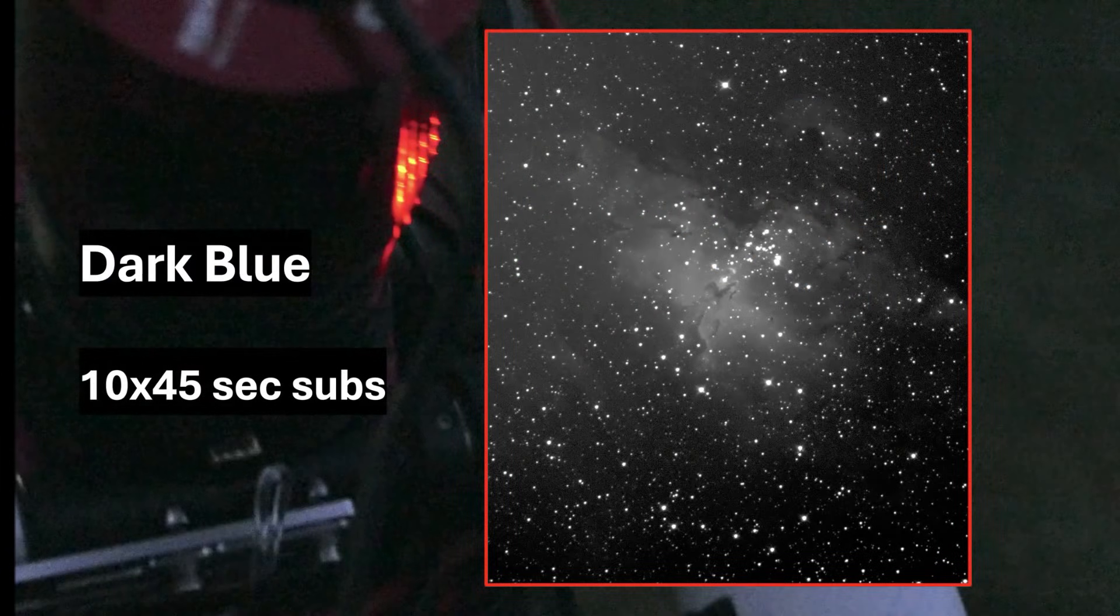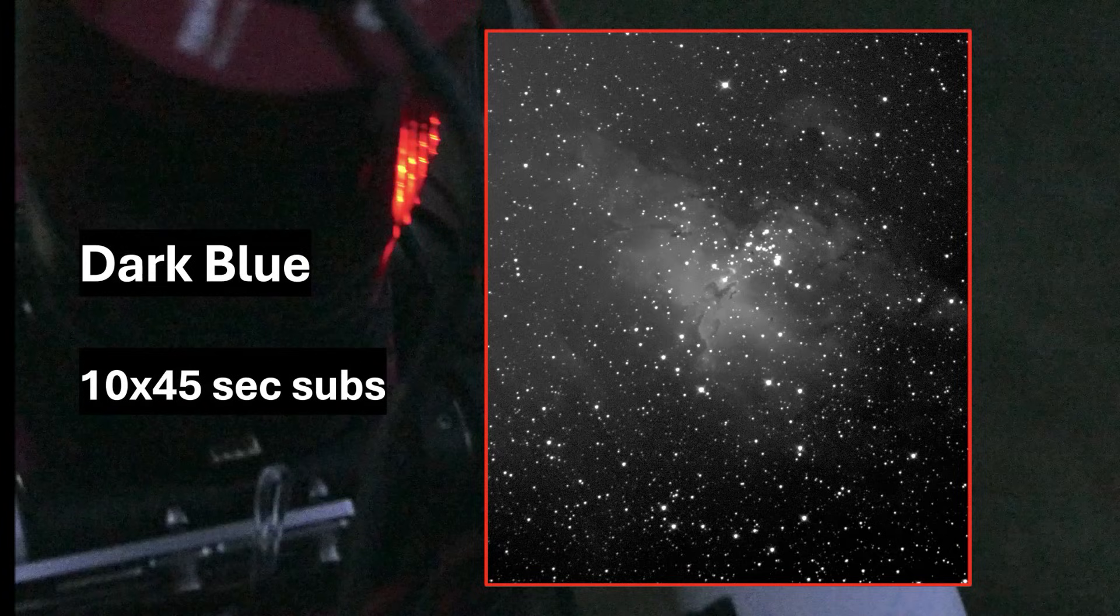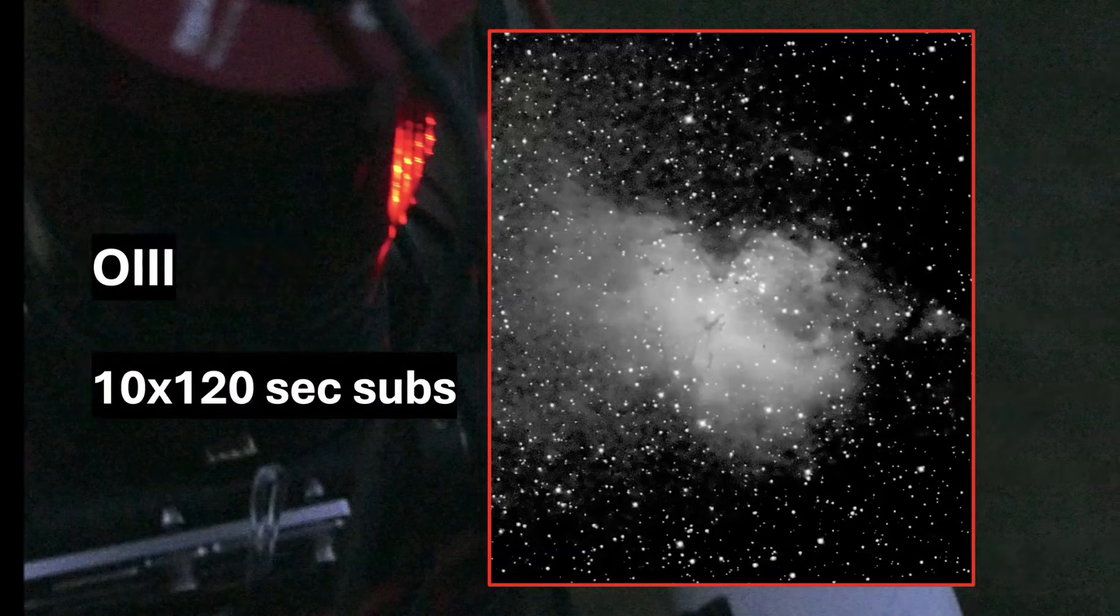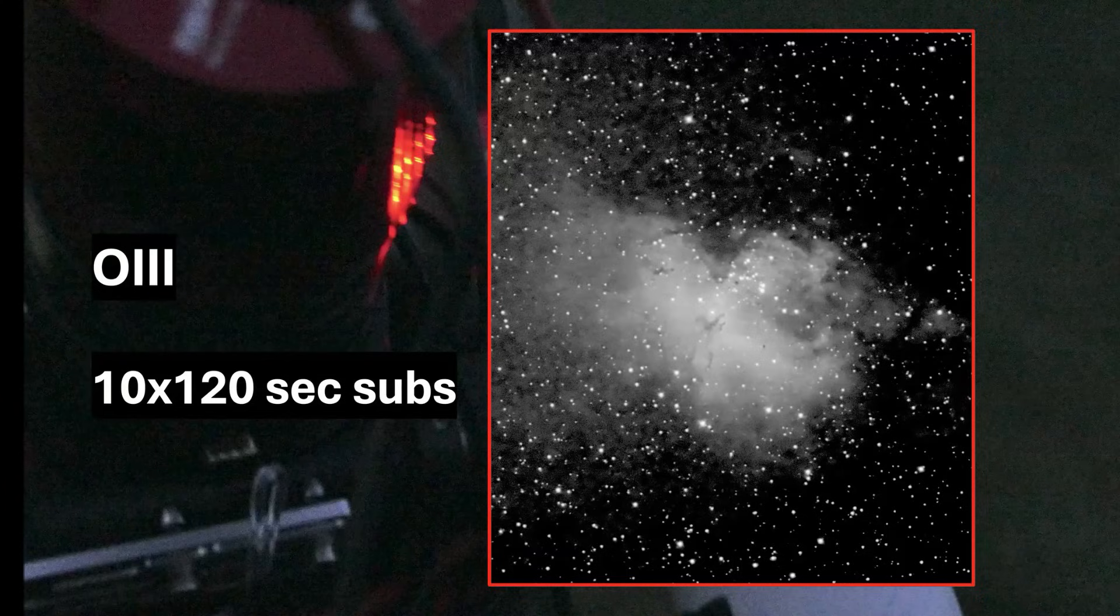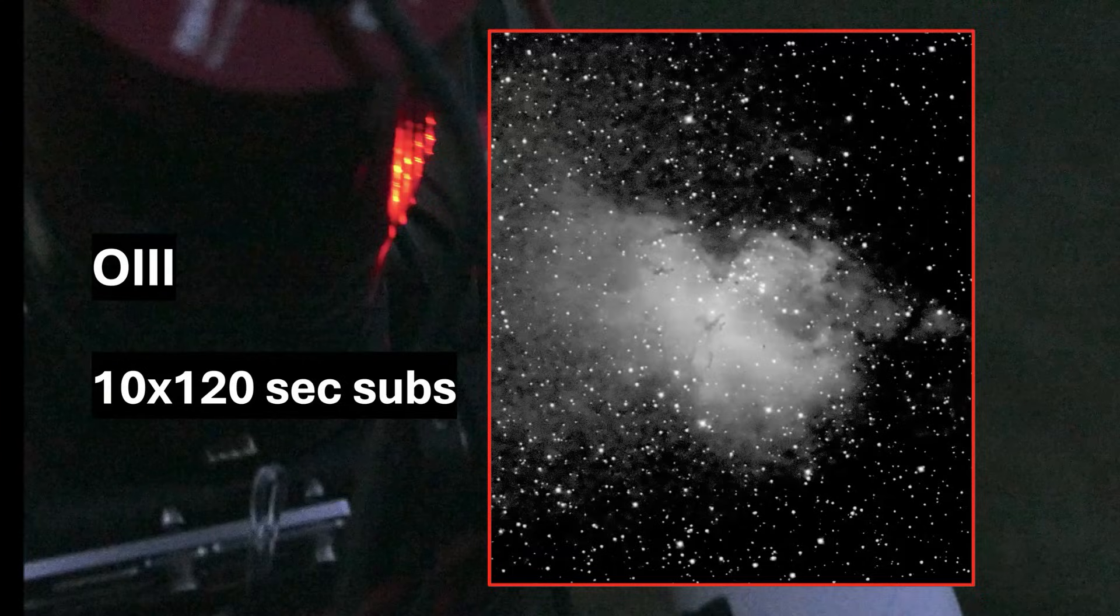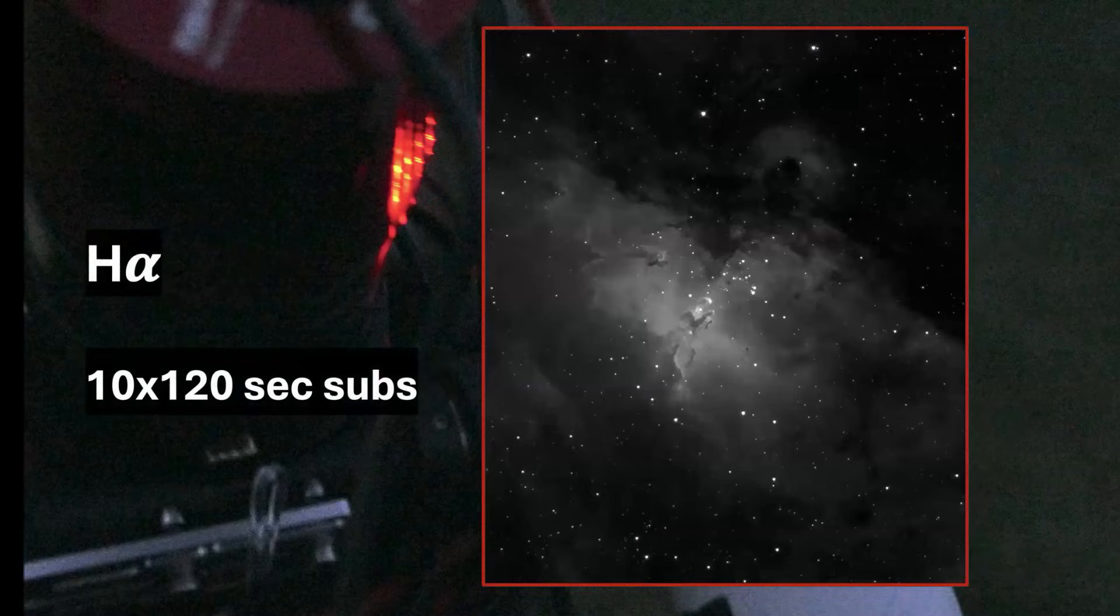Let's look into the results. I'm presenting stacked images, providing the number of subs and the exposure times. This is in dark blue with limited nebulosity. This is oxygen 3 with a strong nebulosity signal around the pillars of creation.